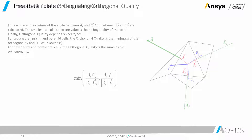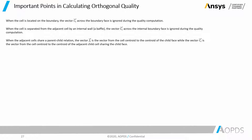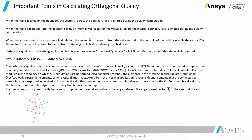Now let's talk about important points in calculating orthogonal quality. When the cell is located on the boundary, the vector CI across the boundary face is ignored during the quality computation. When the cell is separated from the adjacent cell by an internal wall, like a baffle, the vector CI across the internal boundary face is also ignored during the quality computation. When adjacent cells share a parent-child relation, the vector FI is the vector from the cell centroid to the centroid of the child face, while CI is the vector from the cell centroid to the centroid of the adjacent child cell sharing the child face.